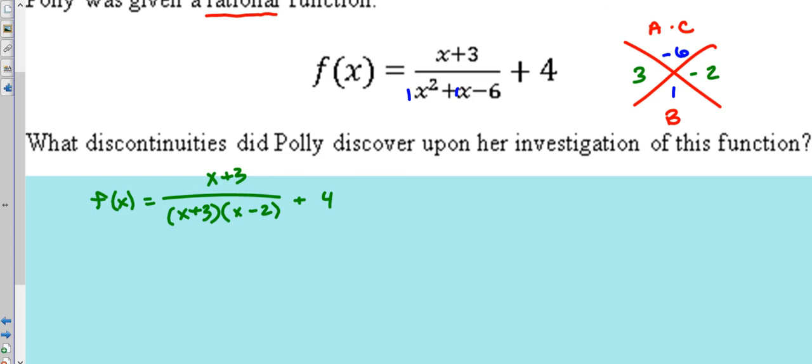Now what we can do once we write it this way is we can see that these factors cancel out. Now a canceled out factor is a removable discontinuity. So when x, that value, I know it says x plus 3, but if you set it equal to 0, you'd find that x equals negative 3 is a removable discontinuity, also known as a hole.